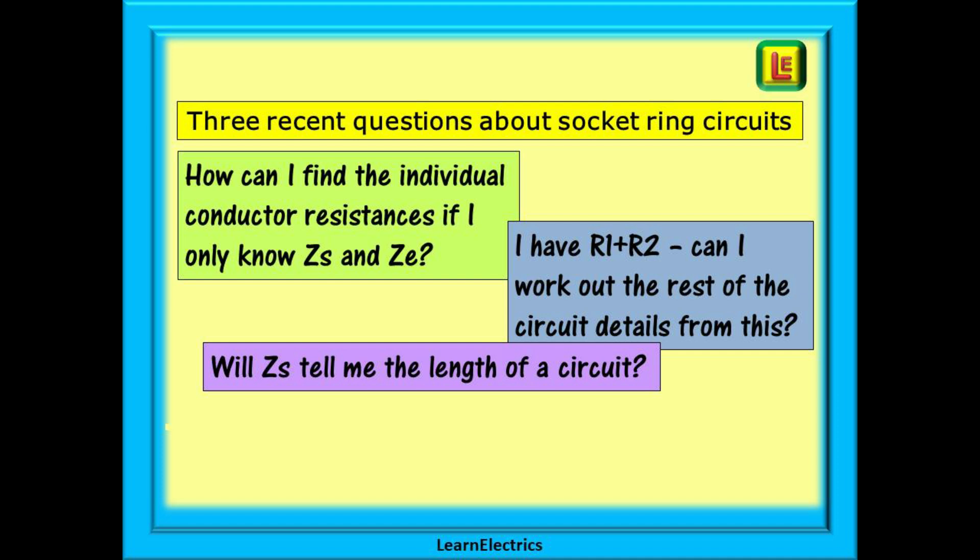I have R1 plus R2. Can I work out the rest of the circuit details from this? And will Zs tell me the length of a circuit?